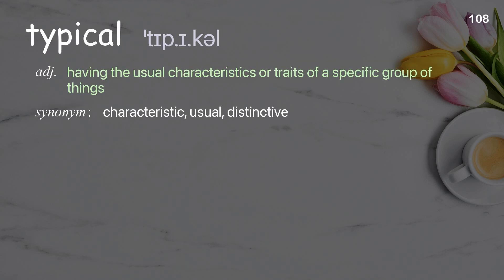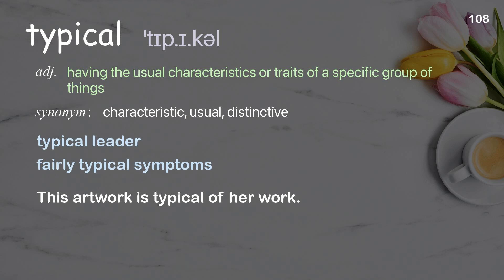Typical: having the usual characteristics or traits of a specific group of things. Examples: typical leader, fairly typical symptoms. This artwork is typical of her work.